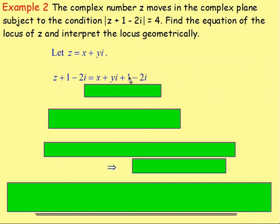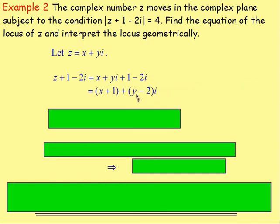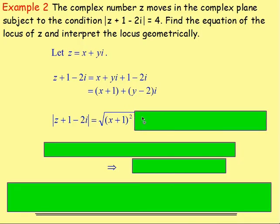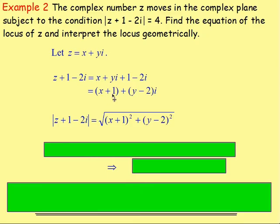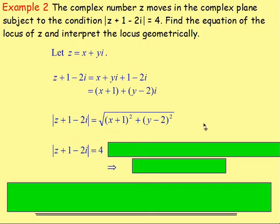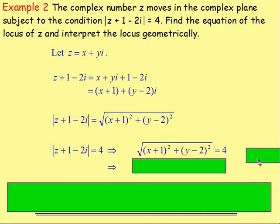Gather the real parts and imaginary parts. Real parts: x + 1. Imaginary parts: yi − 2i = (y − 2)i. So the modulus of z + 1 − 2i is the square root of (x + 1)² + (y − 2)². We're told this modulus equals 4, so the square root of (x + 1)² + (y − 2)² = 4. Squaring both sides gives (x + 1)² + (y − 2)² = 16.